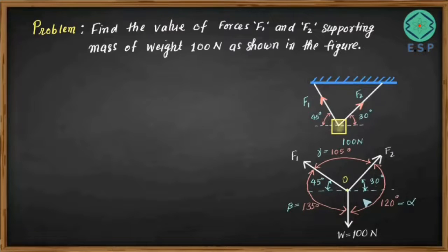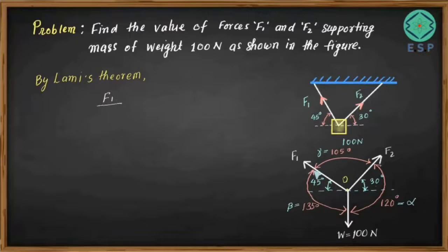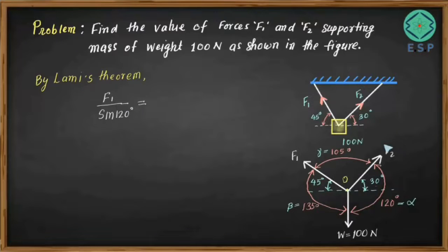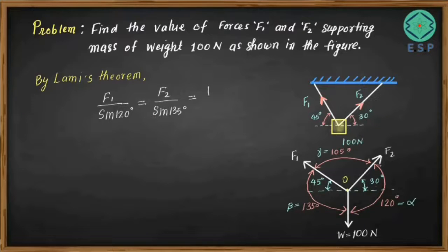By Lamy's theorem: F1 / sin(120°) = F2 / sin(135°) = W / sin(105°). We can now easily find the unknown values of F1 and F2 from this equation.